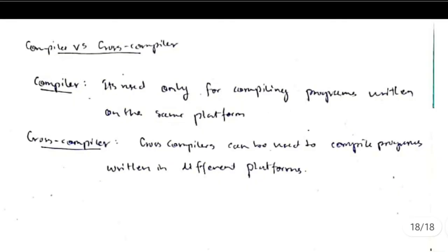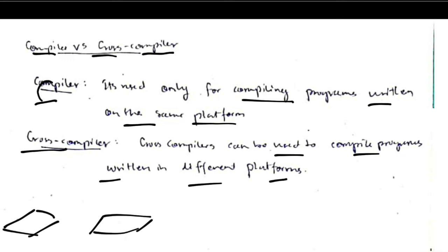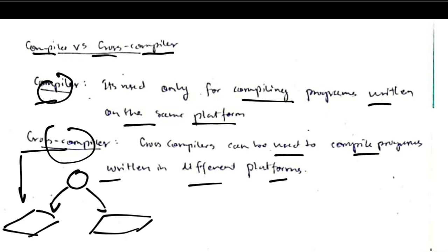Finally, compiler versus cross compiler: a compiler is used only for compiling programs on the same platform, while a cross compiler can compile programs written for different platforms — such as Apple OS, Linux, and others. If you use a regular compiler, you can only compile on the same platform, whereas a cross compiler can be used across multiple platforms.